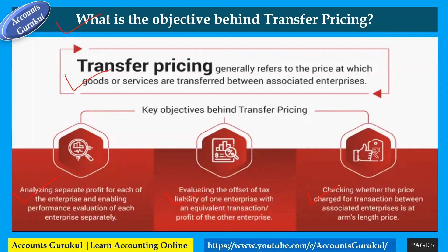By doing transfer pricing, we can know how much profit each separate enterprise earns, enabling performance evaluation. We can evaluate the offset of tax liability — whatever transactions are done, the tax liability is offset accordingly. It also ensures the price charged to associated enterprises is at arm's length, meaning consistent with what would be charged in third-party transactions.